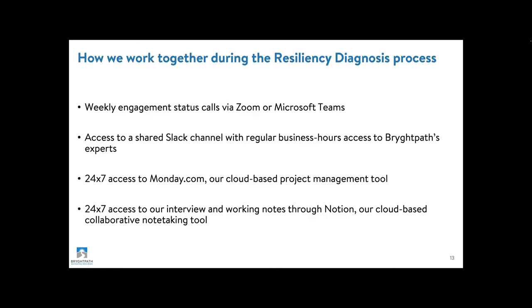So how do we work together during this process? We hold weekly engagement status calls, typically on Fridays for 30 to 45 minutes, via Zoom or Microsoft Teams. You get access to a shared Slack channel where you have regular business hours access to the engagement team here at BrightPath. We give you 24/7 web access to monday.com — our cloud-based project management tool — allowing you to see exactly where we're at with the engagement, timelines, what's completed, pending, at risk, or behind. And you get complete 24/7 access to our interview and working notes stored in Notion, our cloud-based collaborative note-taking tool.